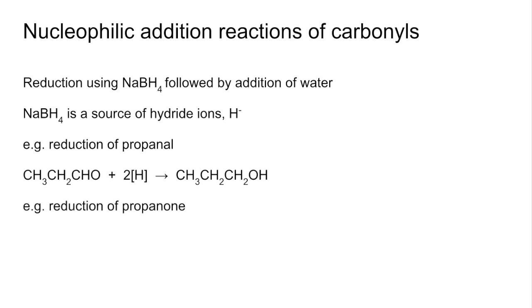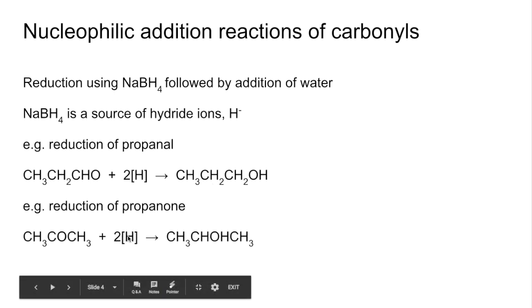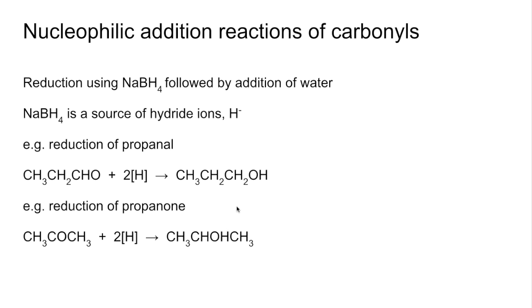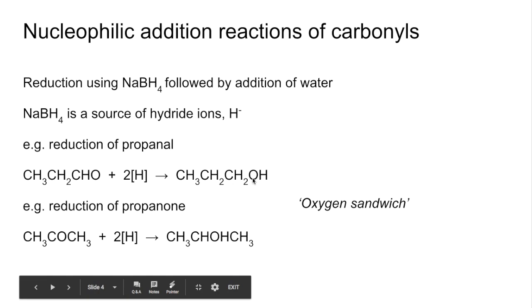If we look at propanone — a ketone — a similar thing is going on. We've got two moles of reducing agent and again we put one hydrogen either side of the oxygen, giving the CHOH group, so this is a secondary alcohol. I've got a silly way to remember this — it's called the oxygen sandwich. The two moles of reducing agent basically sandwich the oxygen, one either side.